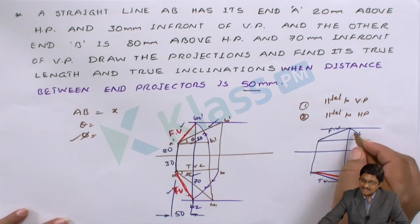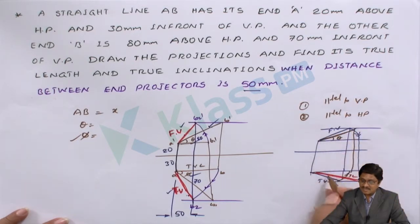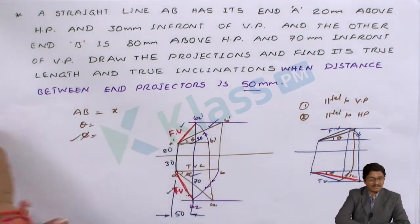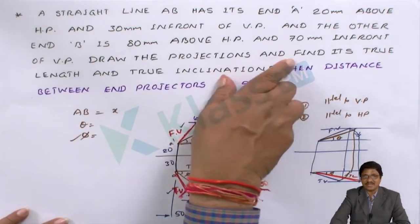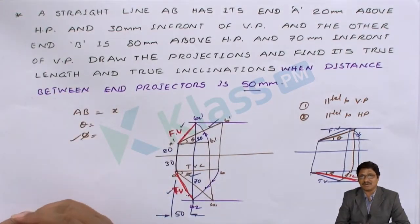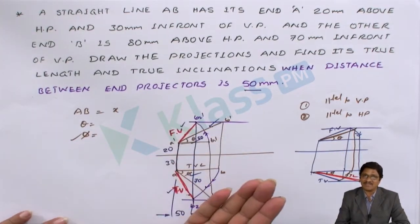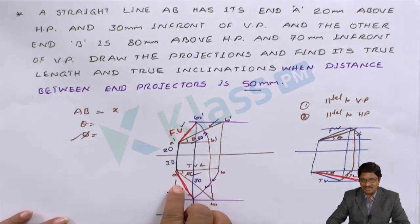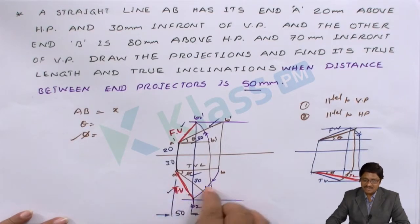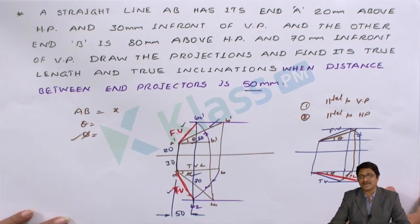Draw the arc in reverse — from there, draw the line up to the locus line, then join it. This is theta, this is phi. Whenever the information about the projection is given and you are asked to find the true length — just before we discussed the problem where from the line we moved to the front view and top view. Now the front view and top view information has been given; you have to get back in the same way we approached to find the solution.